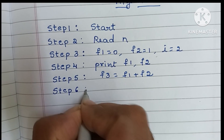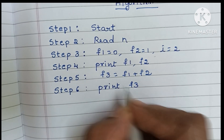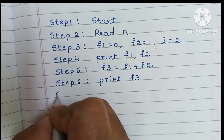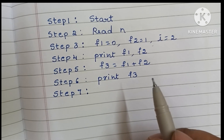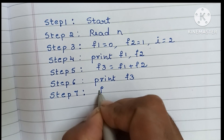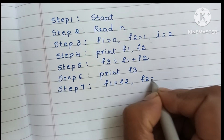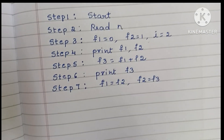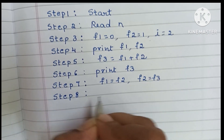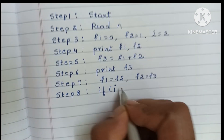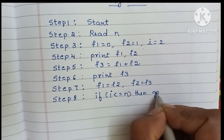Step 6: print the value of f3. Step 7: interchange the values — set f1 equal to f2, and f2 equal to f3. Step 8: if i is less than or equal to N, then go to Step 5.